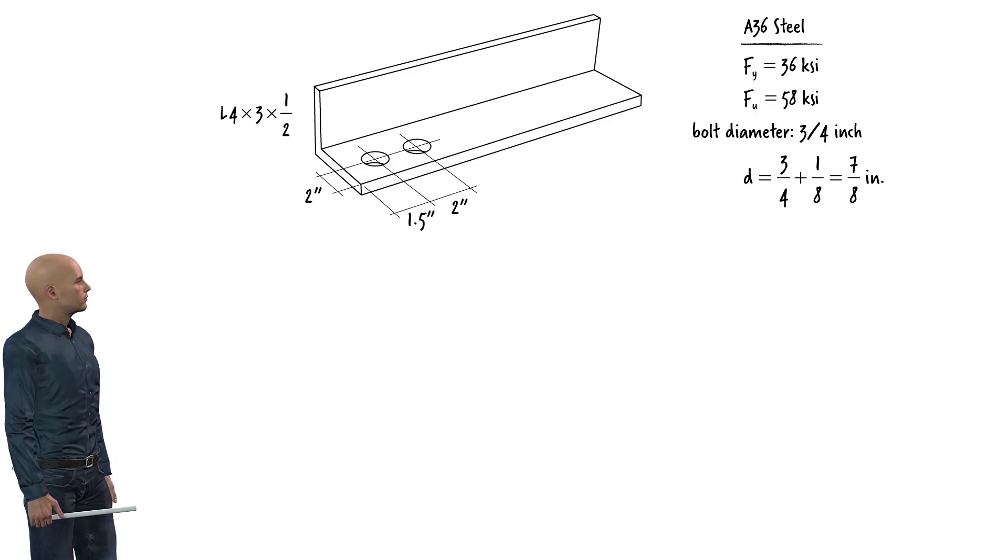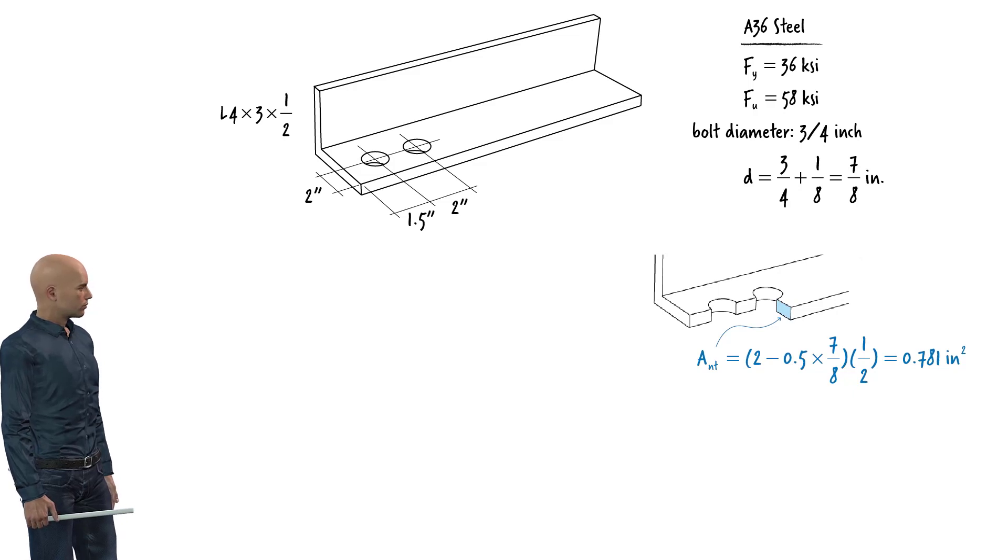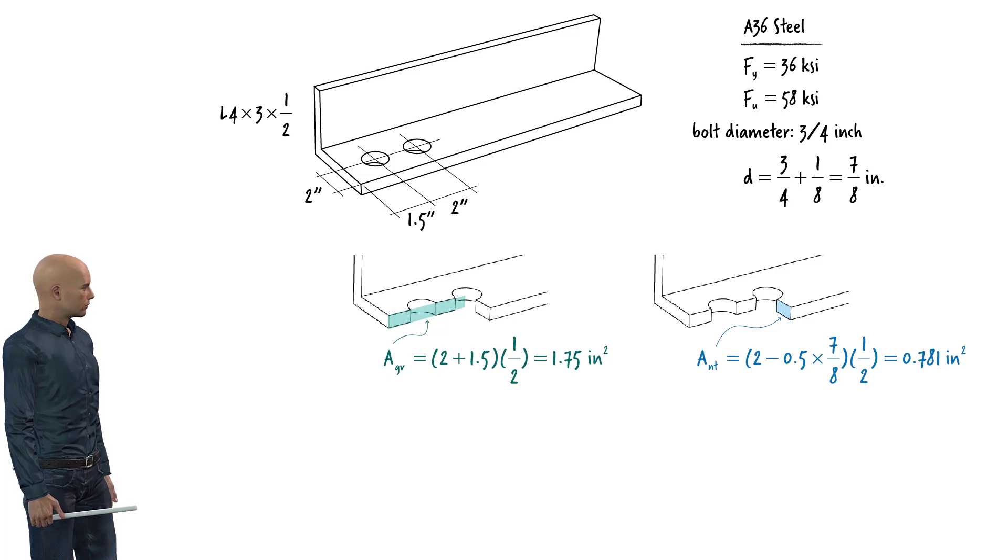The net tension area equals... The gross shear area is... And the net shear area can be calculated as follows.